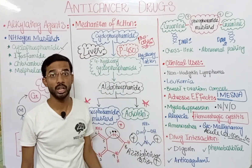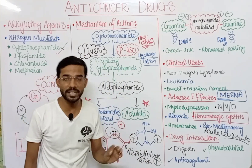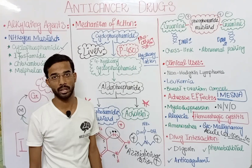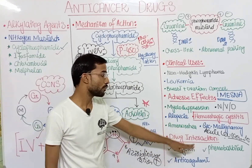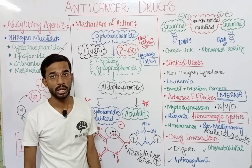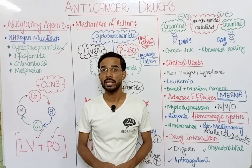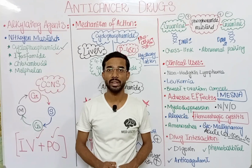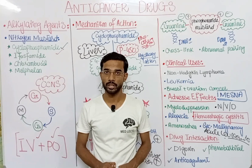Regarding drug interactions, drugs that should not be taken along with cyclophosphamide include digoxin, phenobarbital, and anticoagulants. That is all about cyclophosphamide. If you have any questions, you may ask in the comments section. Thank you so much.